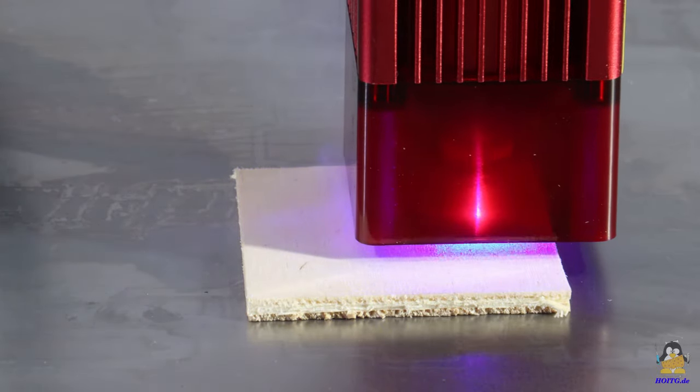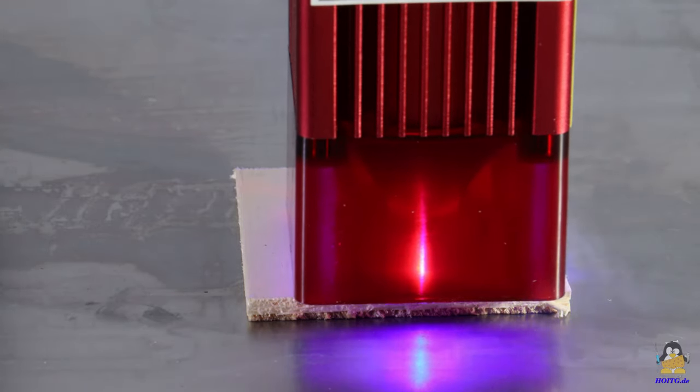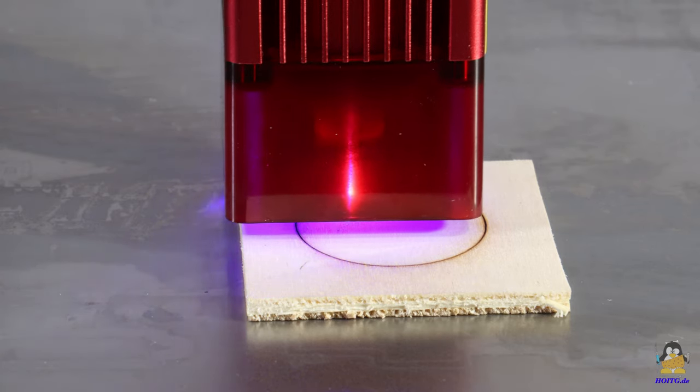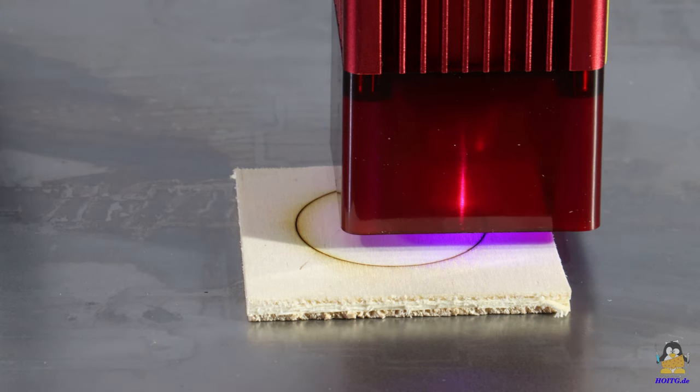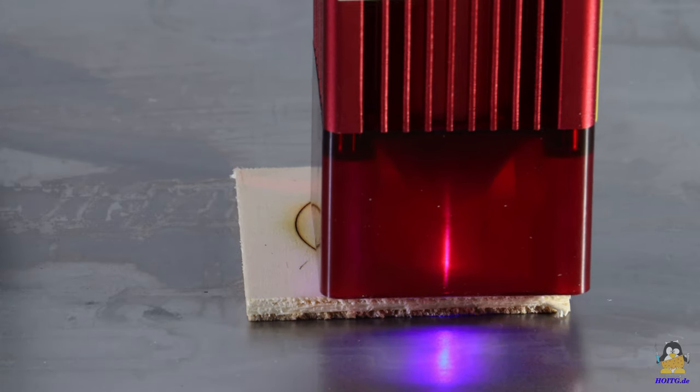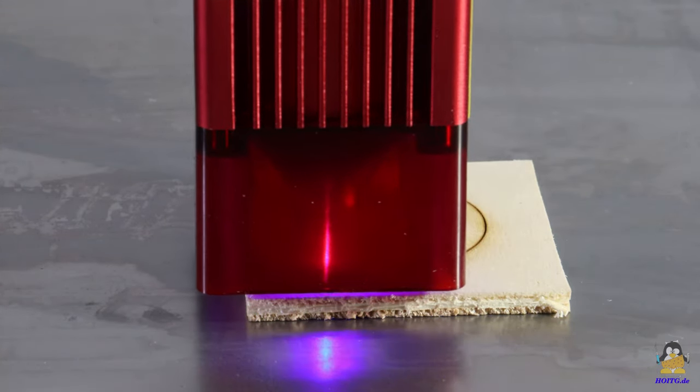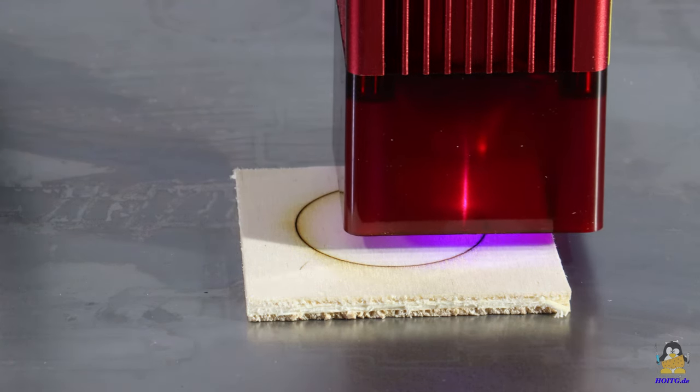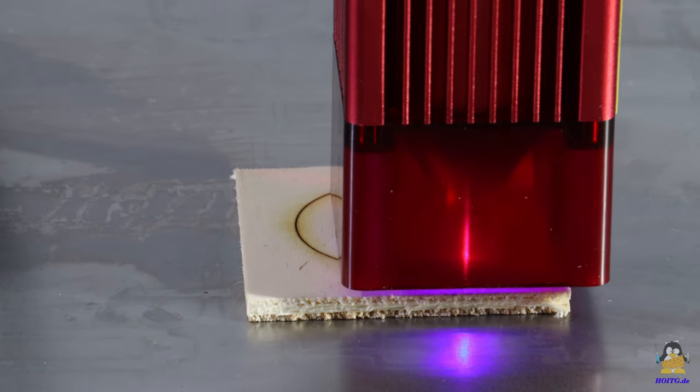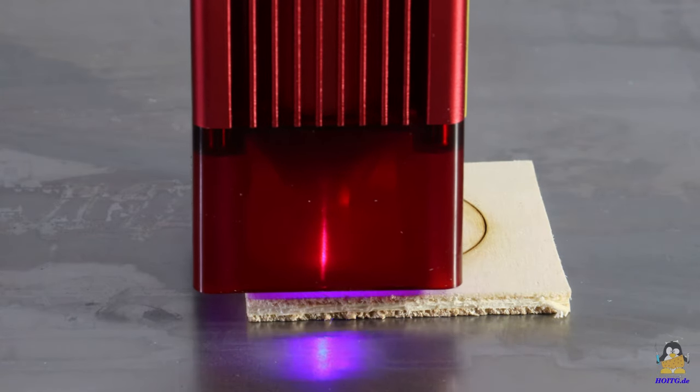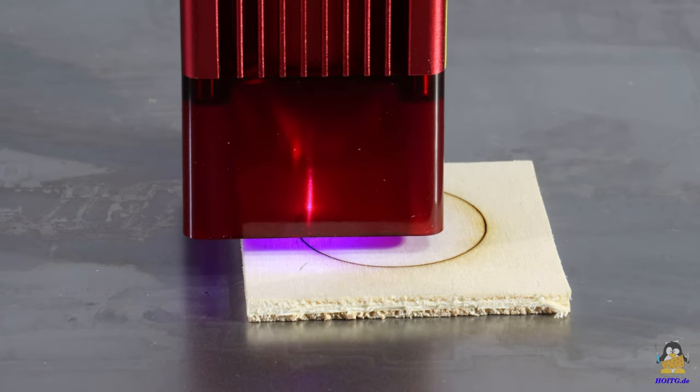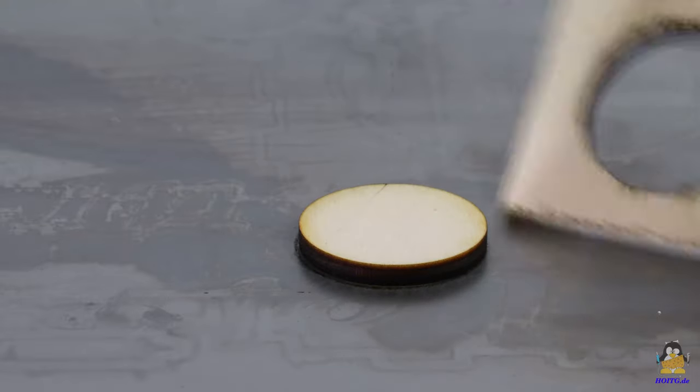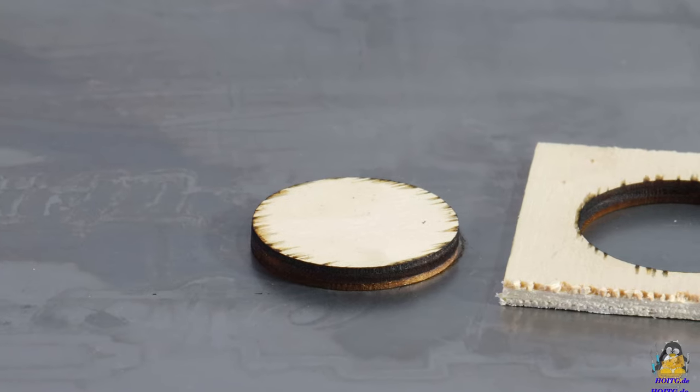As a first test I cut a disc out of 4mm poplar plywood. The laser power is set to 80%, the feed rate to 300mm per minute. With these settings, the disc is cut out after three passes. The wood was placed on a sheet of steel and the underside looks anything but nice, because it was wetted by the vaporized material, visible at the cutting edge.